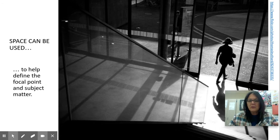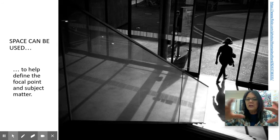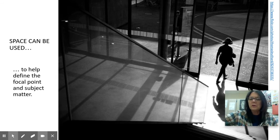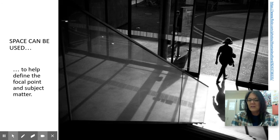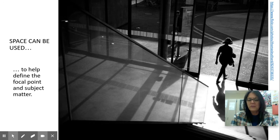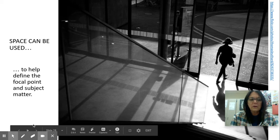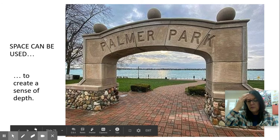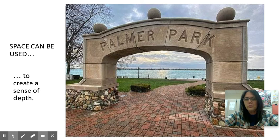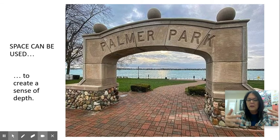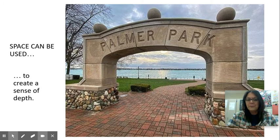Space is when you can kind of see through an area and you can see that things are in the foreground, middle ground, and background. This woman is going through a door, so you can see space — there's stuff on the other side of the door. If you can take a picture to show things in the foreground, middle ground, and background, that shows space. I took this picture in Palmer Park. You can see through that arch — you can see the water and the land behind it. The arch is large in the front, so you can see foreground, middle ground, background. If you can see that in your picture, it's not just flat. That creates a sense of depth for space.